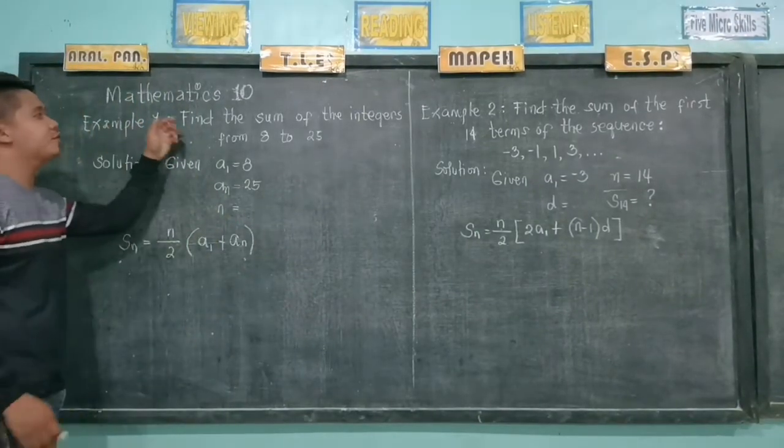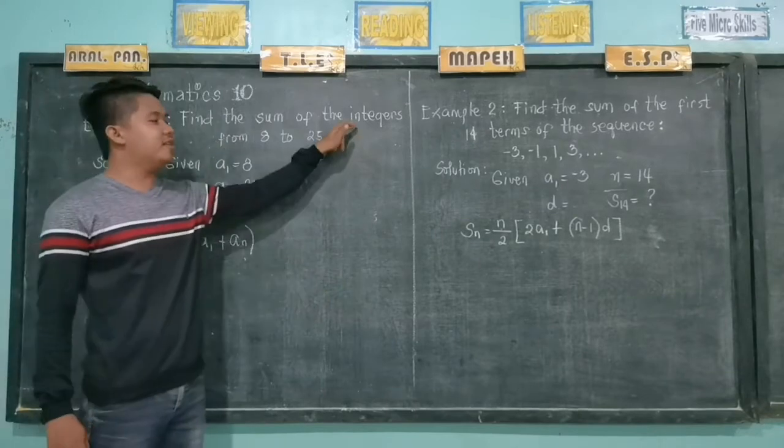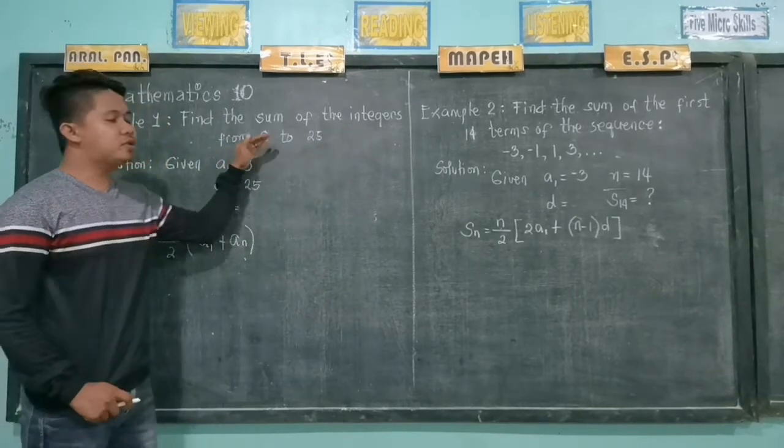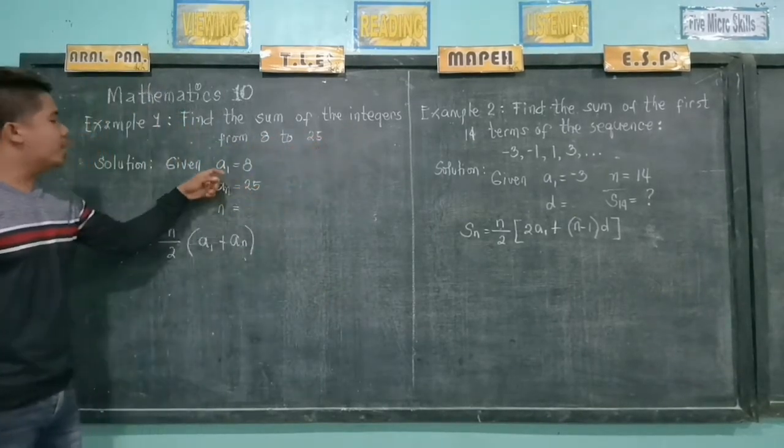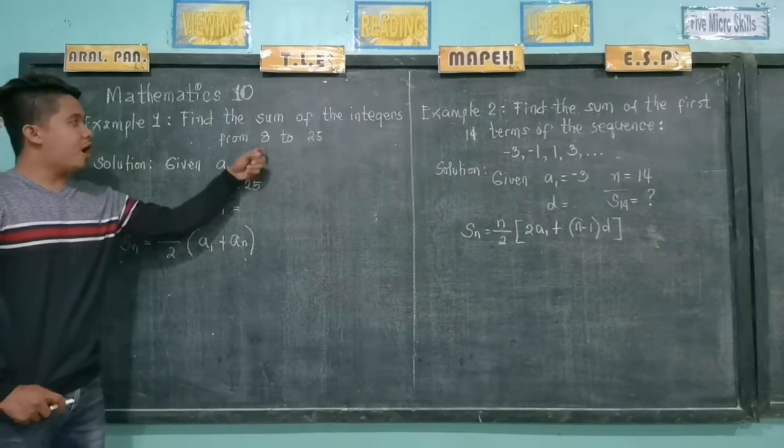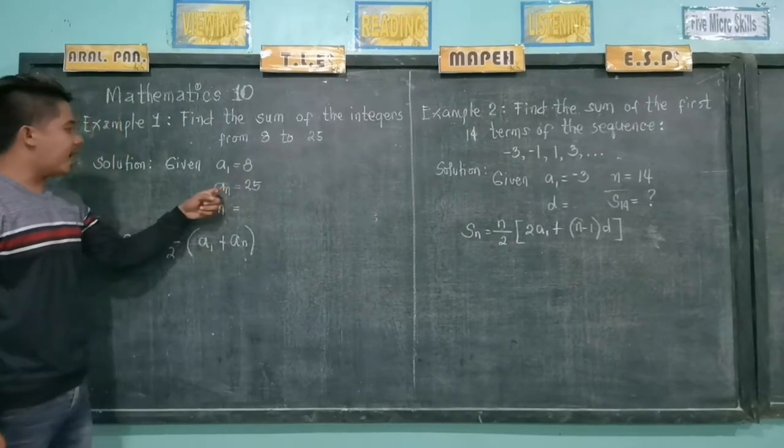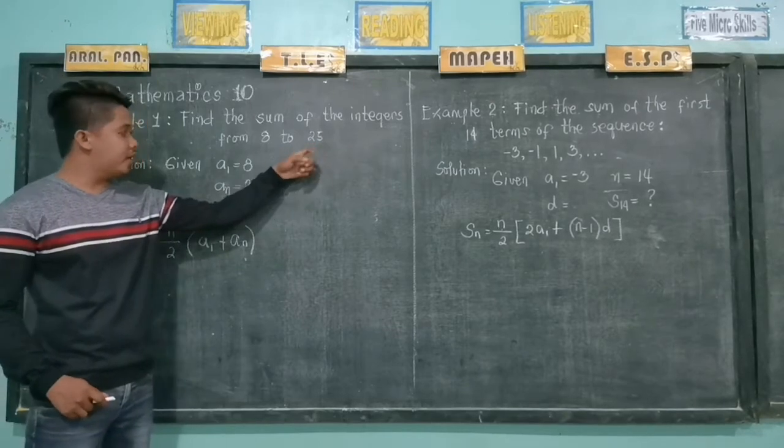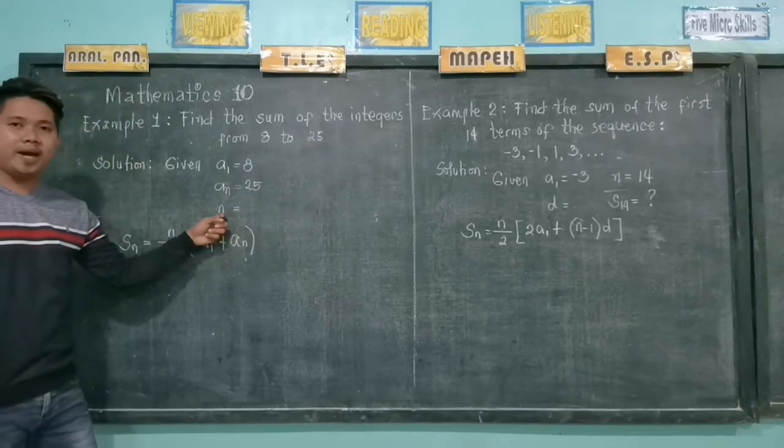We have the first example, Example 1, to find the sum of the integers from 8 to 25. So our a sub 1 is 8, our first term, and then our last term is 25. Now, what is the value of n?